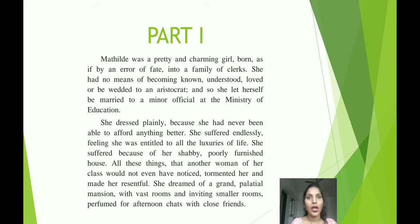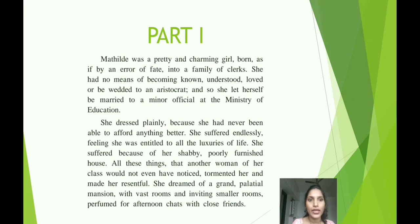Part 1. Mathilde was a pretty and charming girl, born as if by an error of fate into a family of clerks. She had no means of becoming known, understood, loved or be wedded to an aristocrat, and so she let herself be married to a minor official at the Ministry of Education. She dressed plainly because she had never been able to afford anything better. She suffered endlessly, feeling she was entitled to all the luxuries of life. She suffered because of her shabby, poorly furnished house — all these things that another woman of her class could not even have noticed tormented her and made her resentful.